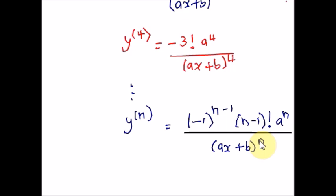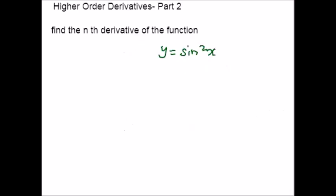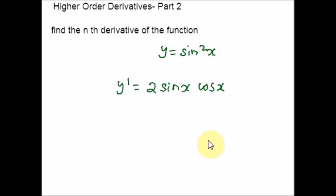Now let us move on to the next example where I take a trigonometric function. Find the nth derivative of the function y = sin²x. Let us calculate the first few derivatives. The first derivative y' = derivative of sin²x = 2 sin x · cos x. Because we have a function within a function, we use the chain rule. Using the identity, 2 sin x cos x = sin 2x, so we replace it.